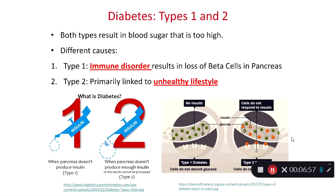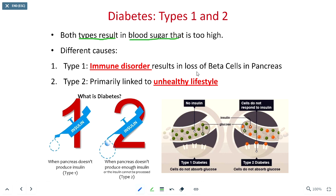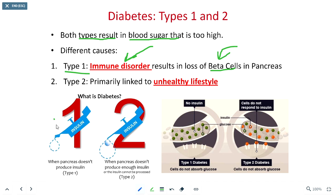We need to spend extra time focusing on diabetes, as it is becoming one of the single most expensive diseases in the United States. Both types of diabetes result in blood sugar that is too high. Type 1 diabetes is an autoimmune disorder where the beta cells within the pancreas are destroyed. Those beta cells secrete insulin, so if there are no beta cells to make insulin, no insulin is produced.